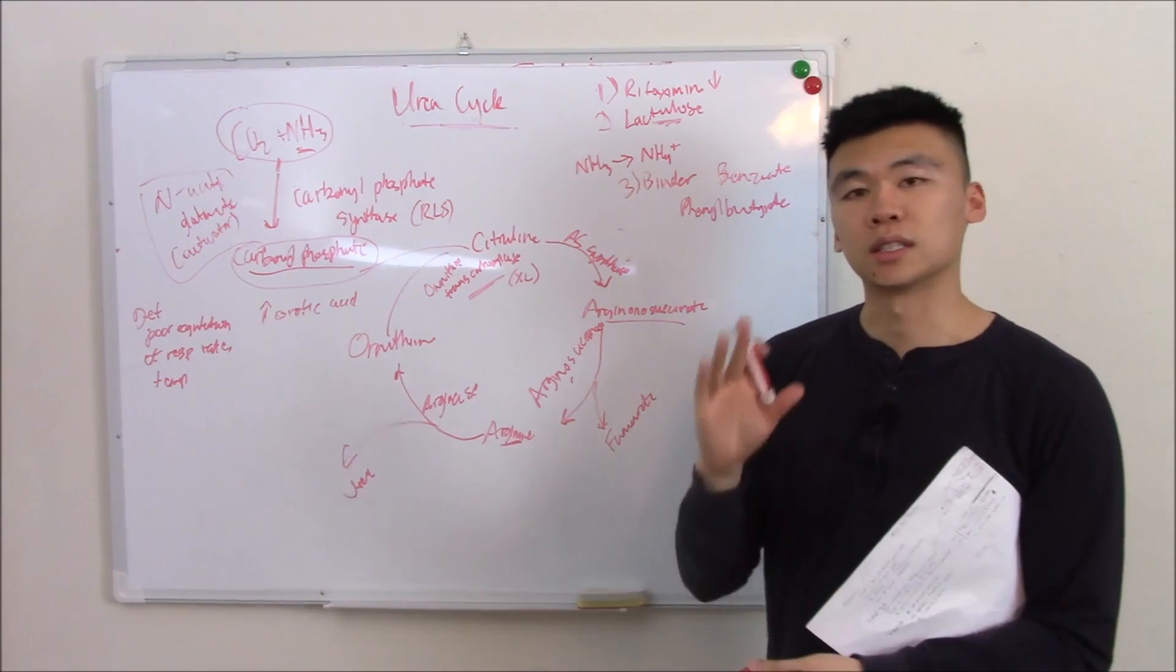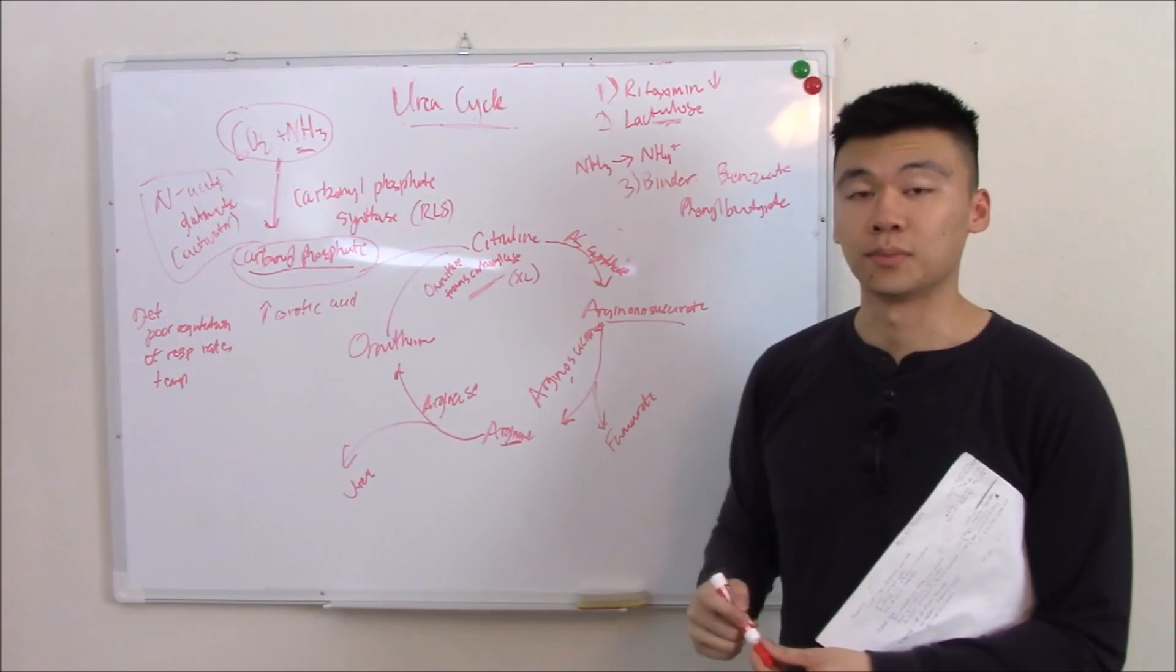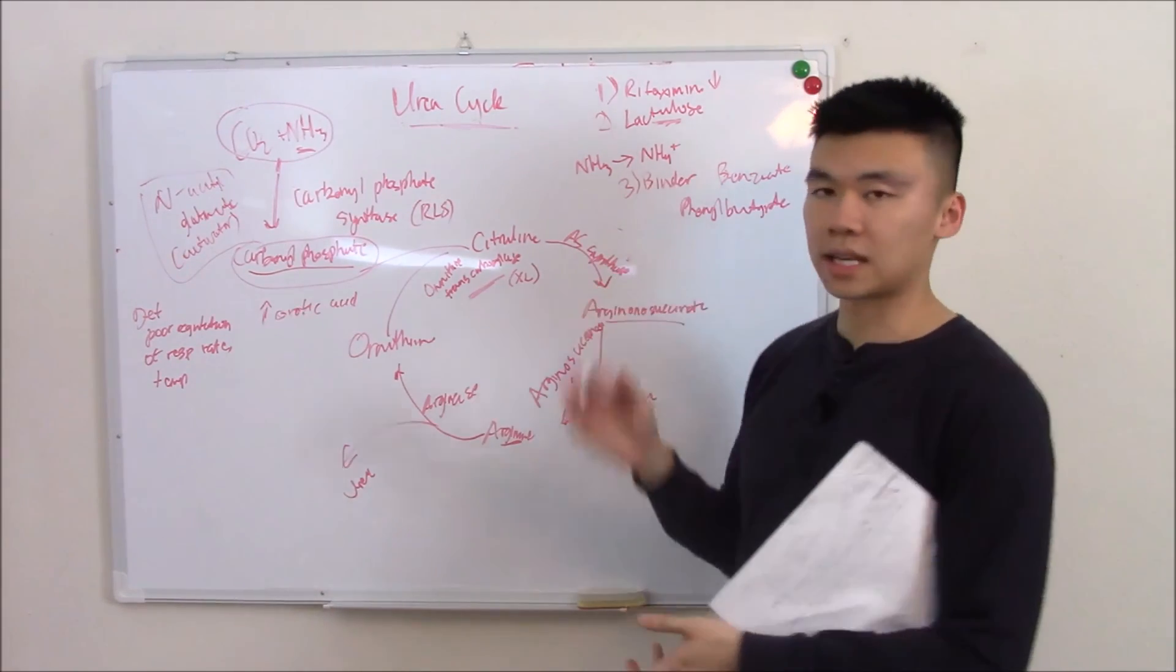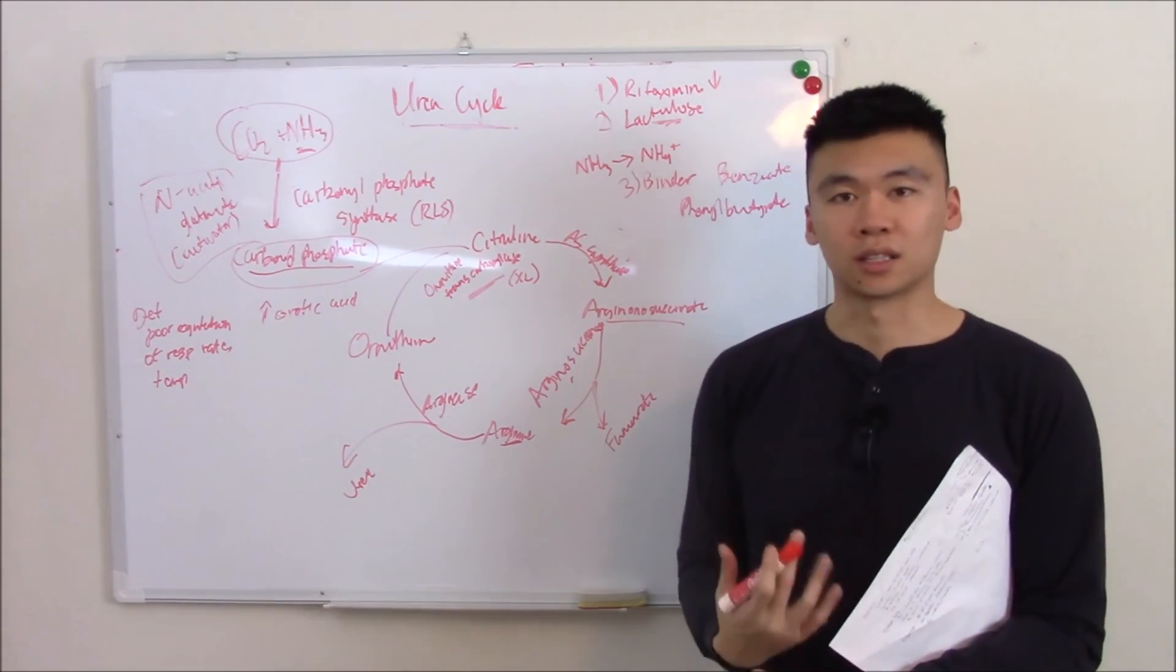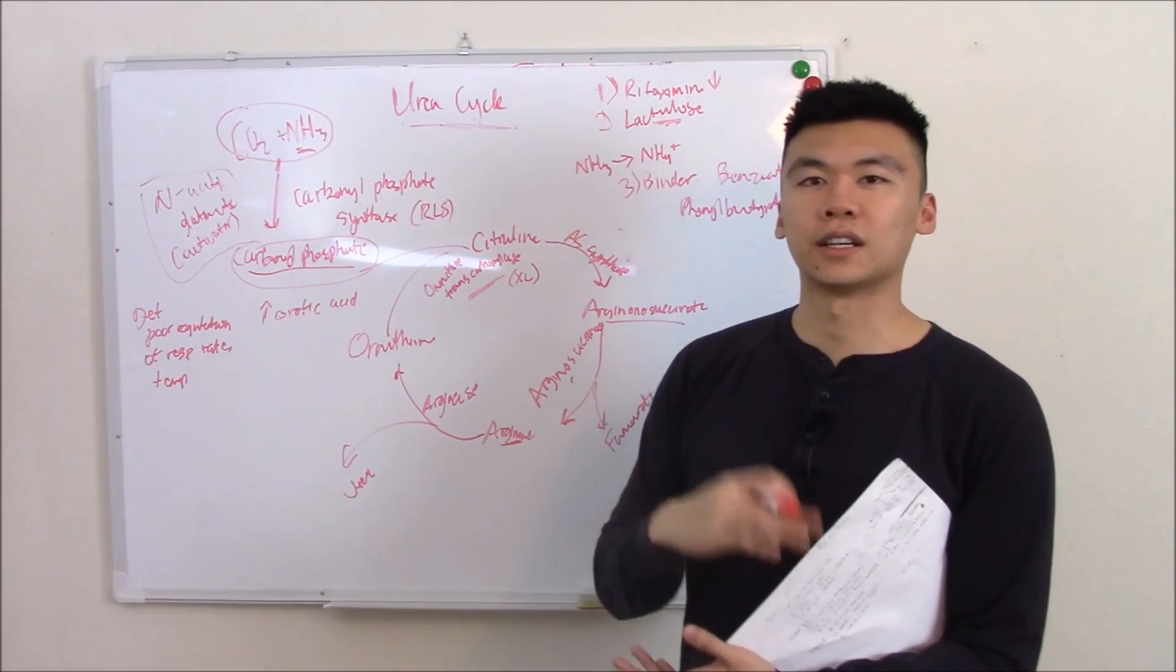But last but not least, you can just limit the amount of protein the patient eats. That is the urea cycle, that is how we get rid of nitrogenous waste. That does it for this video, thanks.